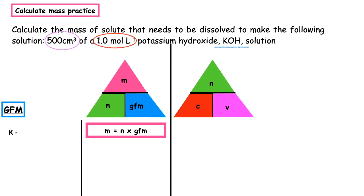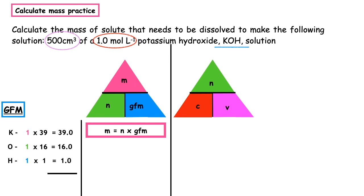How many potassiums do we have? We have one multiplied by the relative atomic mass, which is 39 — one times 39 equals 39. Oxygen: we have one multiplied by the relative atomic mass which is 16 — one times 16 equals 16. Hydrogen: we have one multiplied by the relative atomic mass which is 1 — one times one equals one. When we add those up we get a GFM of 56 grams. We can substitute that into our formula.